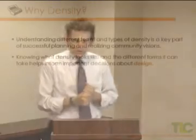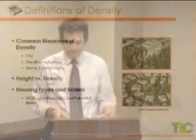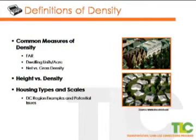In the last video we saw some of the different reasons for planning for more density in the region. This video will go through some of the terms you often hear when talking about density, so that we have a common vocabulary from which to proceed. There are several common measures of density: FAR or floor area ratio, dwelling units per acre, and net versus gross density. There also needs to be some consideration of height versus density and different types of housing at different scales.